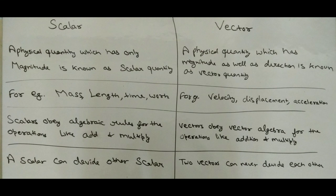Under scalar quantities, a physical quantity which has only magnitude is known as a scalar quantity. But under vector quantity, a physical quantity which has magnitude as well as direction is known as a vector quantity.